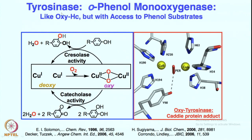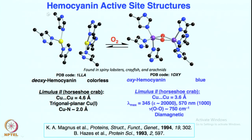If you look at another enzyme, tyrosinase, it has exactly a similar structure. In the previous case of hemocyanin, there is no organic substrate involved in the whole process — its only job is that it binds with oxygen, carries it, and releases it wherever required. So it is a completely reversible process: oxygen is getting reduced, but it gets back to its original form when it needs to be delivered. This is almost oxygen-binding chemistry; of course electron transfer is occurring, but no organic substrate is getting reacted.